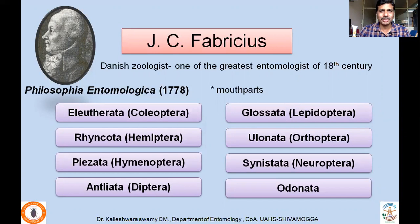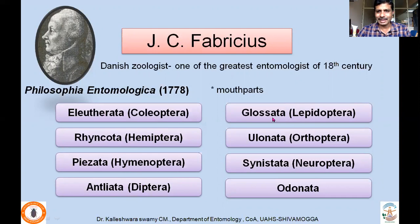Followed by Carolus Linnaeus, his student J.C. Fabricius, who is a Danish entomologist and one of the greatest anthropologists of the 18th century, published the Philosophia Entomologica and primarily used mouthparts for classification. Whereas Linnaeus used wing structure, Fabricius used mouthparts. His classification included Eleutherata (presently called Coleoptera), Rhynchota (Hemiptera), Physeta, Hymenoptera, Antliata, Diptera, Glossata (Lepidoptera), Ulonata (Orthoptera), Synistrata, Neuroptera and Odonata. These are the orders which Fabricius recognized.